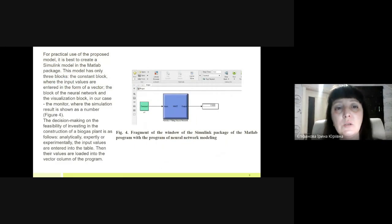For practical use of the proposed model, it is best to create a Simulink model in the MATLAB package. This model has only three blocks: the constant block where the input values are entered in the form of a vector, the block of neural network, and visualization block. In our case, a monitor where the simulation result is shown as a number, and the decision making on the feasibility of investing in the construction of the biogas plant.